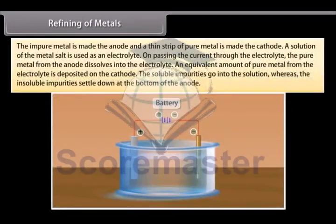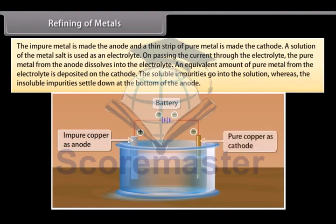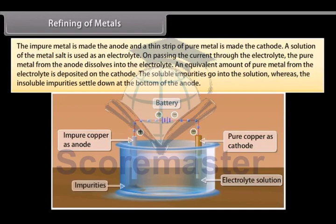The impure metal is made the anode and a thin strip of pure metal is made of cathode. A solution of the metal salt is used as an electrolyte. On passing the current through the electrolyte, the pure metal from the anode dissolves into the electrolyte. An equivalent amount of pure metal from the electrolyte is deposited on the cathode. The soluble impurities go into the solution whereas the insoluble impurities settle down at the bottom of the anode. These are known as anode mud.